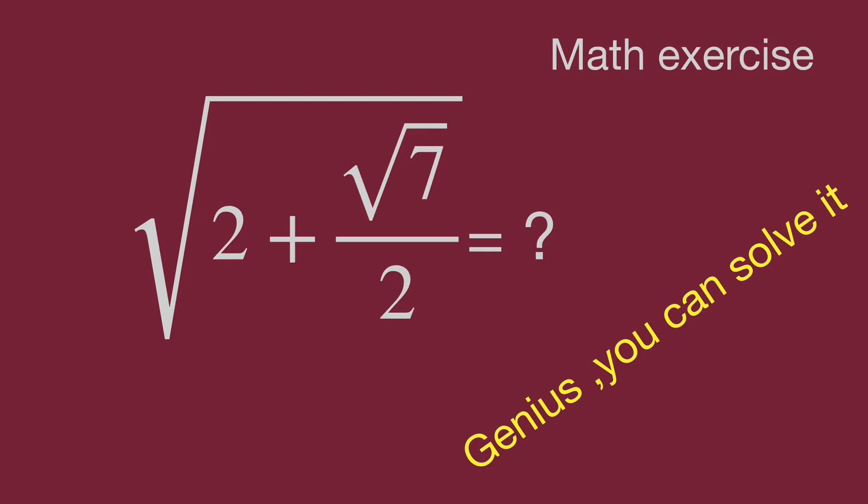The question is to simplify square root of 2 plus square root of 7 over 2. Find the value. Would you please find it? Pause the video and get the answers when you are ready. Keep watching the video to know the result.